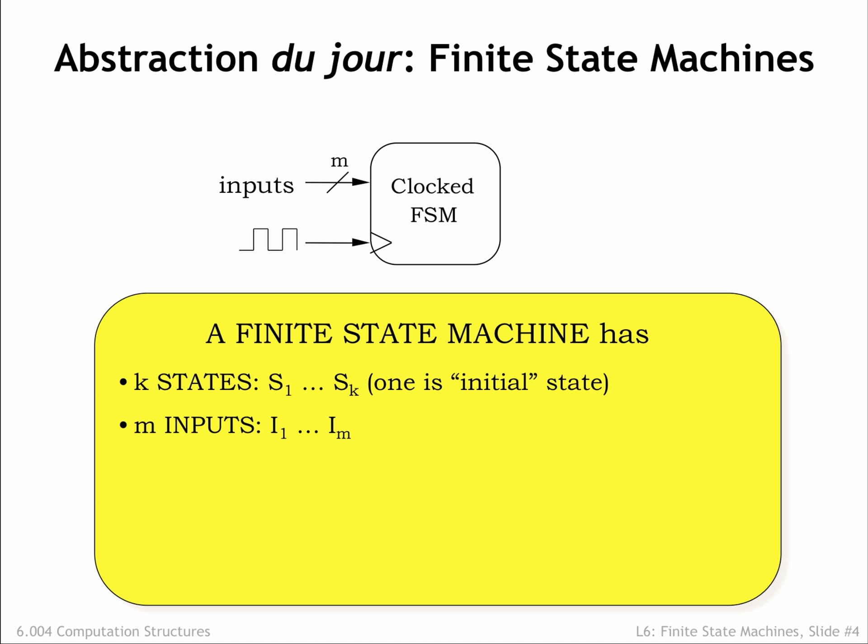Again, there are interesting design trade-offs. Suppose the FSM required 100 bits of input — should we have 100 inputs and deliver all the information at once, or should we have a single input and deliver the information as a 100-cycle sequence? In many real-world situations where the sequential logic is much faster than the physical process being controlled, we often see the use of bit-serial inputs where the information arrives as a sequence, one bit at a time. That allows us to use much less signaling hardware at the cost of the time required to transmit the information sequentially. The same serial vs. parallel trade-off applies equally to choosing how information should be encoded on the outputs.